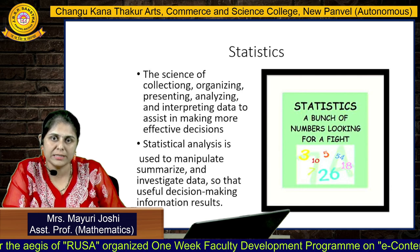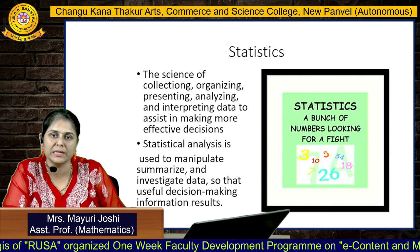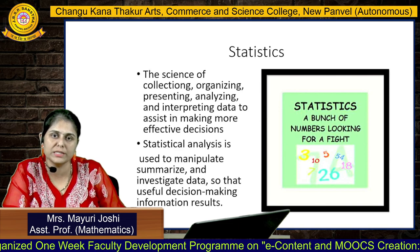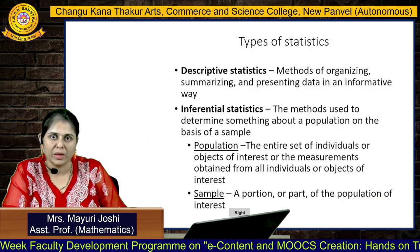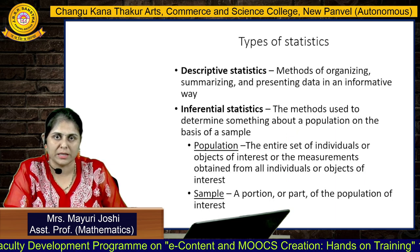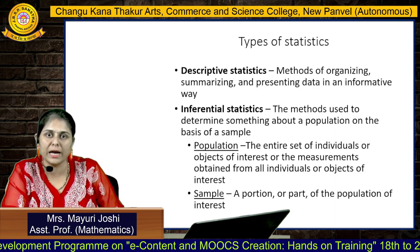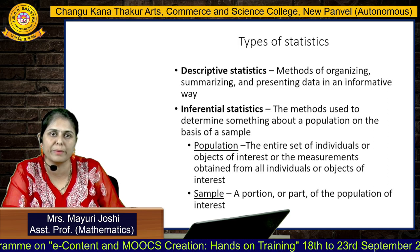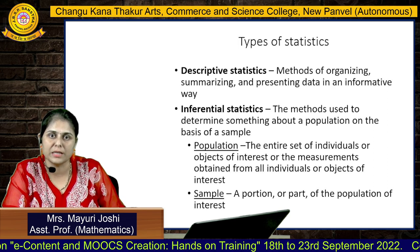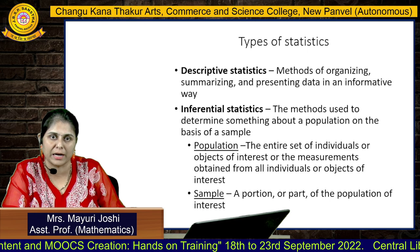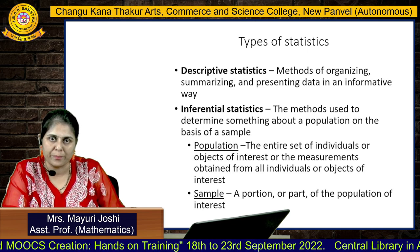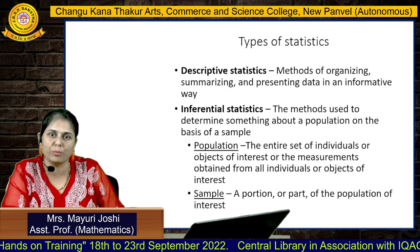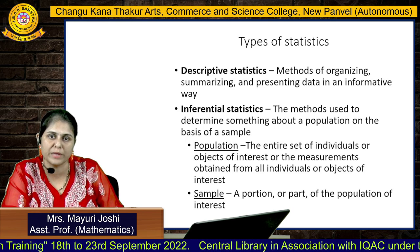Statistical analysis is used to manipulate, summarize and investigate data so that useful decision-making information results. There are two types of statistics: first is descriptive statistics and inferential statistics. In descriptive statistics, we use methods of organizing, summarizing and presenting the data in an informative way. In inferential statistics, we use methods to determine something about the population on the basis of a sample.